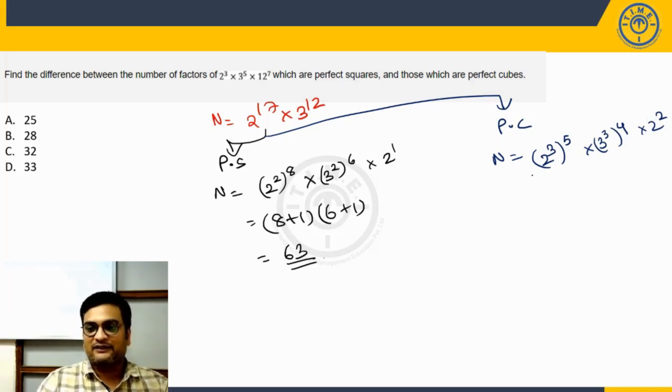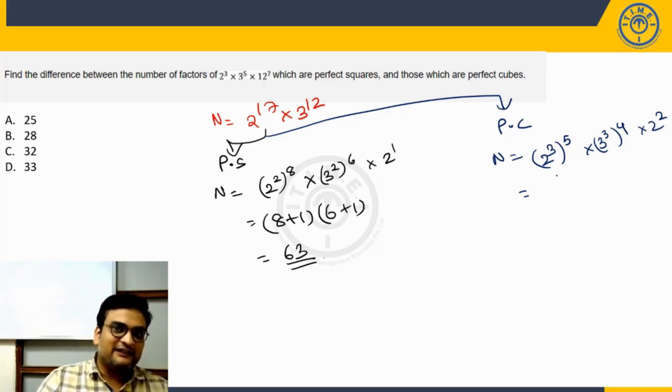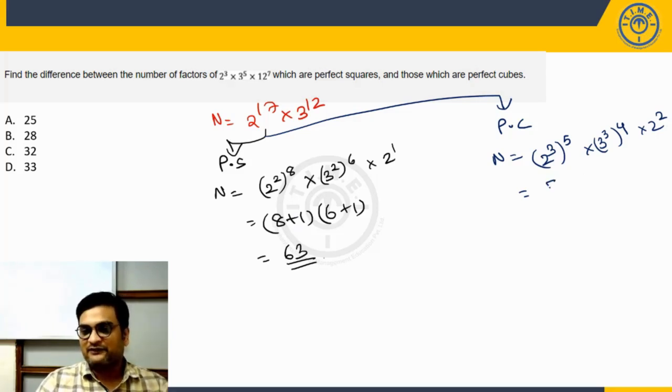So we can just ignore that. Now if you take any factor out of this 2 cube whole power 5, it would definitely be a perfect cube. I hope you can see that similarly as we saw here for perfect squares. So it's going to be 5 plus 1 possibilities here and 4 plus 1 possibilities here. So it's 6 into 5, 30 factors which are perfect cubes.